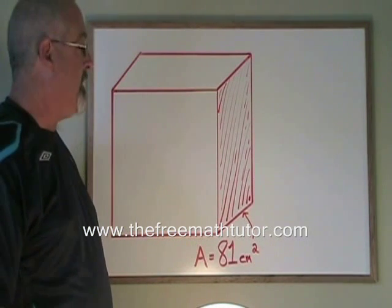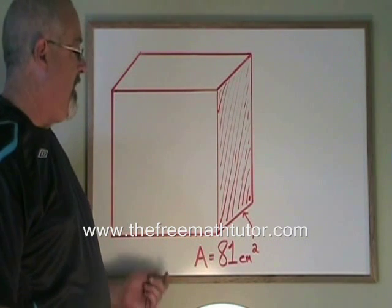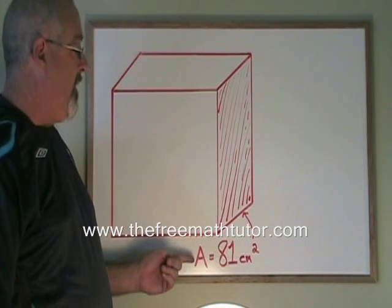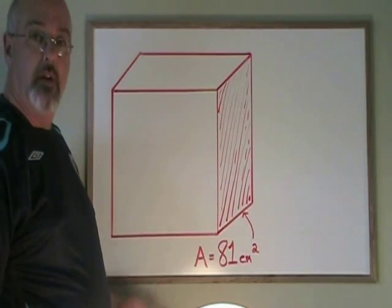Here is another example that has an extra step. In this case, we want to know the volume of this cube, but we are not given a side length. Instead, we are given the area of one of the faces of the cube.